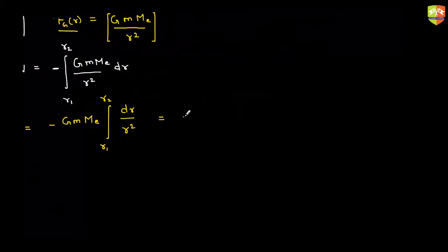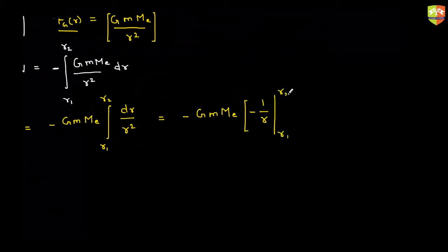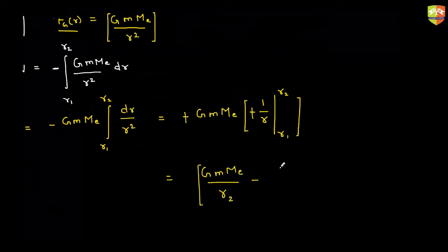The integral of dr by r squared is minus one by r. Limits are from r1 to r2, so the two minus signs get neutralized. This gives G m m_e by r2 minus G m m_e by r1. This is the work done by the gravitational force.